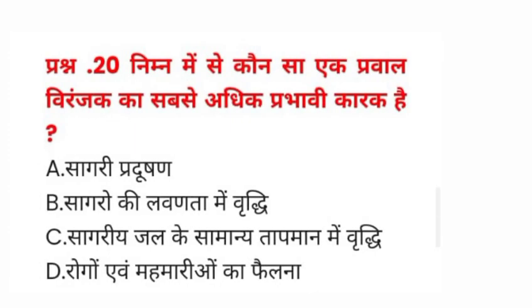Question number twenty: निम्न में से कौन सा एक प्रवाल विरंजन (Coral Bleaching) का सबसे अधिक प्रभावी कारक है? A) सागरी प्रदूषण, B) सागरों की लवणता में वृद्धि, C) सागरीय जल के सामान्य तापमान में वृद्धि, D) रोगों एवं महामारियों का फैलना। इसका सही जवाब C होगा।